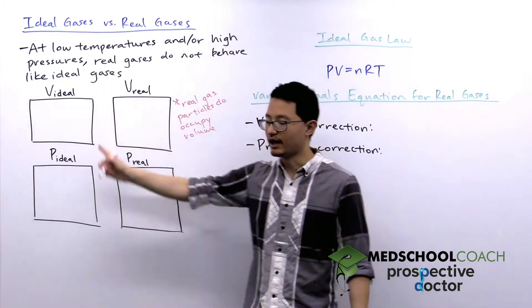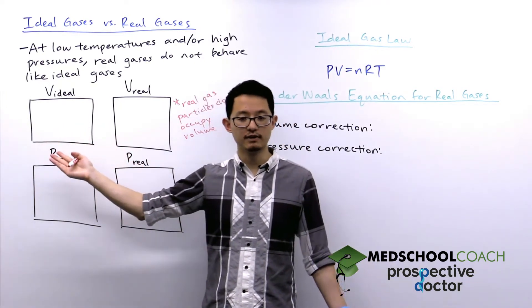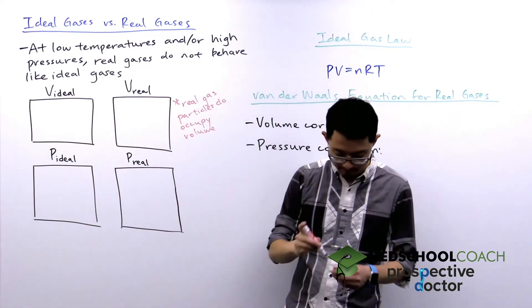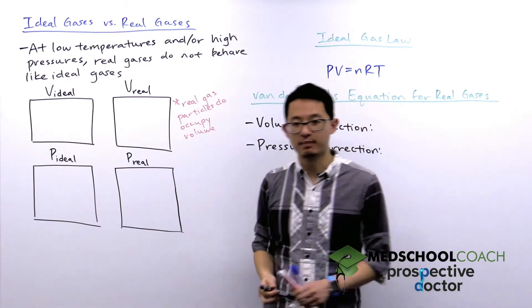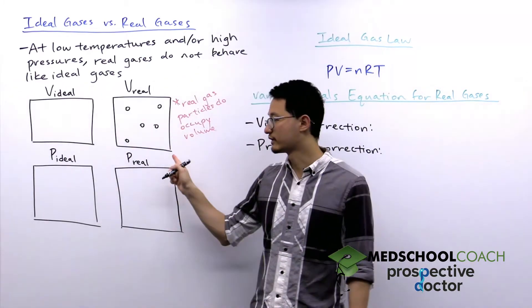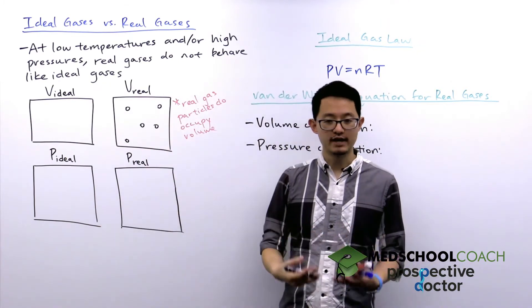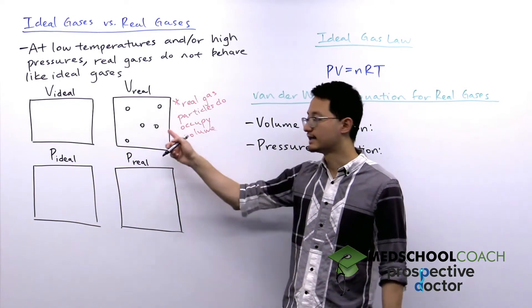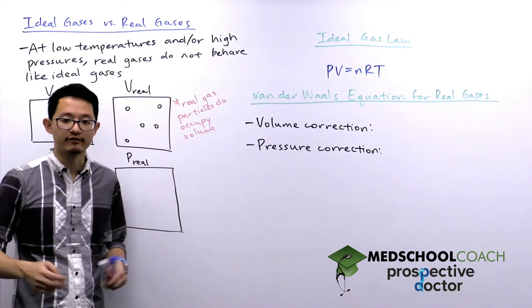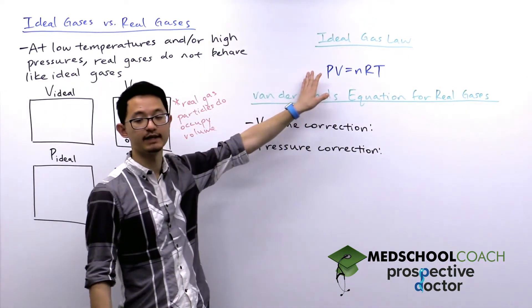For an ideal gas, since particles don't occupy any volume, the volume available to the gas particles is the entire volume of the container. But for real gases, particles do occupy volume. So the volume available to real gases is not the entire container — you have to take the volume of the container and subtract the volume occupied by the gas molecules themselves. We can come up with an equation to correct for this.